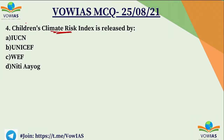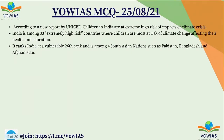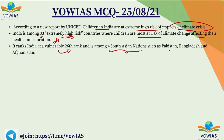The fourth question: the Children's Climate Risk Index is released by — A. IUCN, B. UNICEF, C. World Economic Forum, or D. Niti Aayog. The correct answer is B, UNICEF. A recent report by UNICEF stated that children in India are at extremely high risk from the impact of the climate crisis. India is among 33 extremely high-risk countries where children are most at risk of climate change affecting their health and education. India ranks 26th in vulnerability, and is among four South Asian nations — along with Pakistan, Bangladesh and Afghanistan — at very high risk. Remember: the Children's Climate Risk Index is released by UNICEF, the United Nations International Children's Emergency Fund.